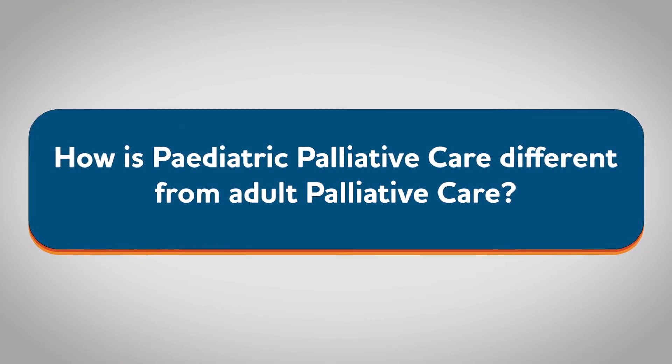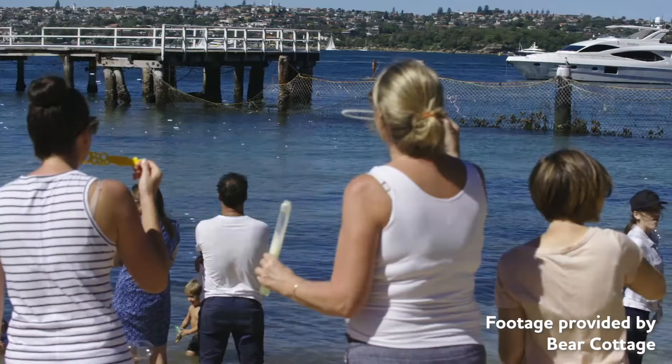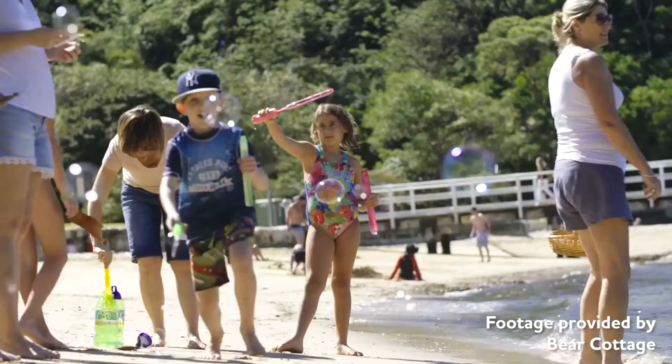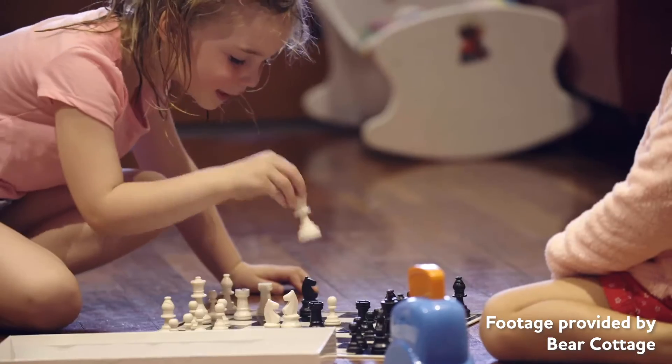How is paediatric palliative care different from adult palliative care? It's to help our beautiful babies, our children, our teenagers, and our families. It's often for a longer period of time because children die of very complex and chronic conditions. What we do know is that if we recognise dying in younger people and plan for it, families feel a lot more supported and cared for.